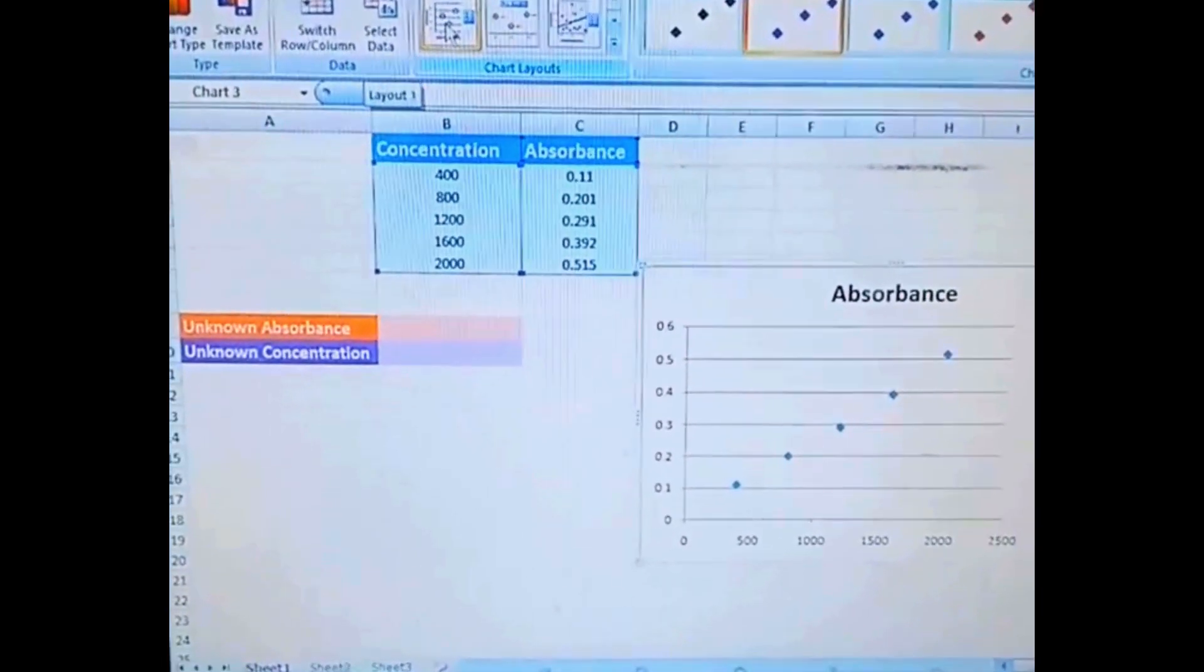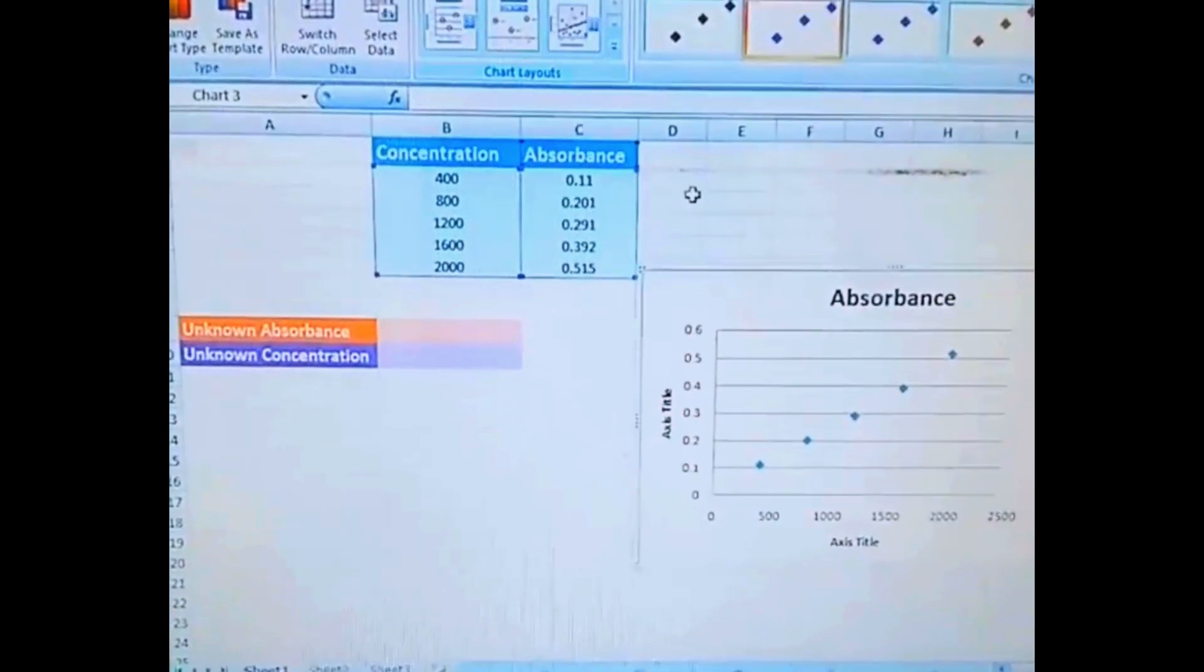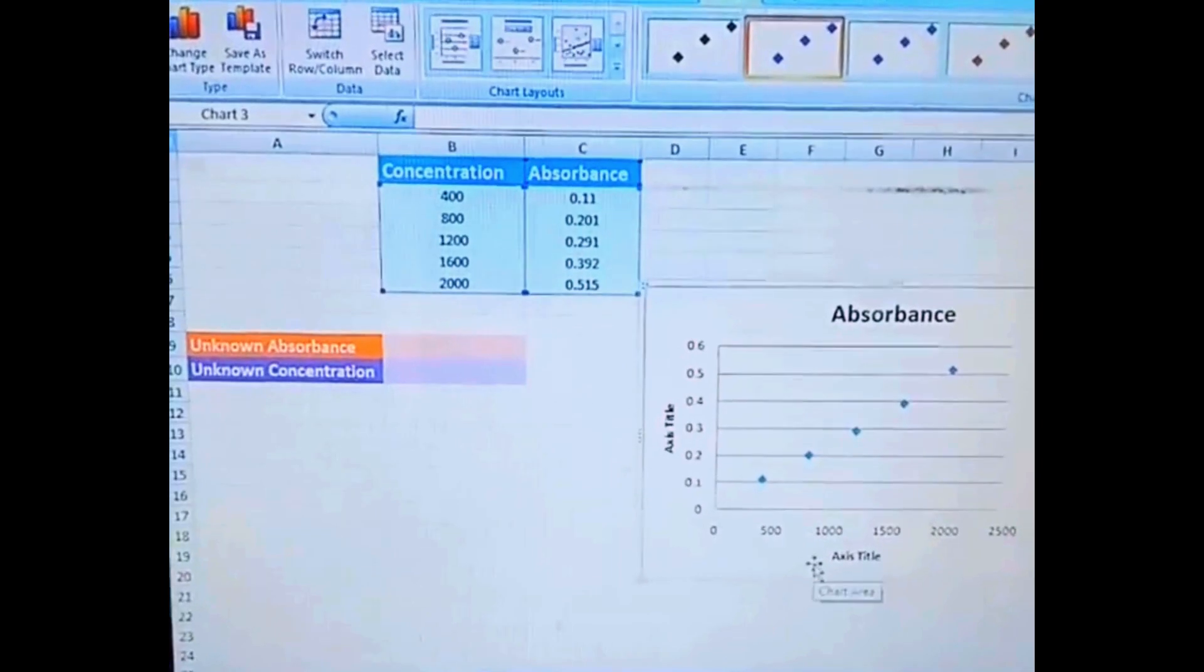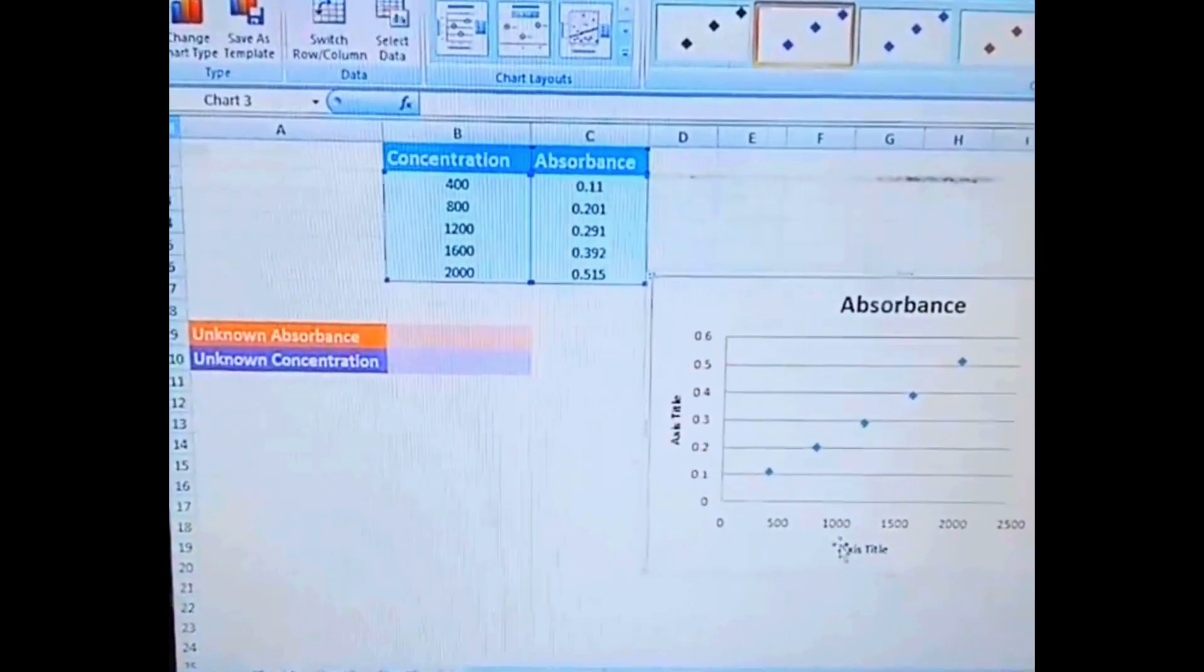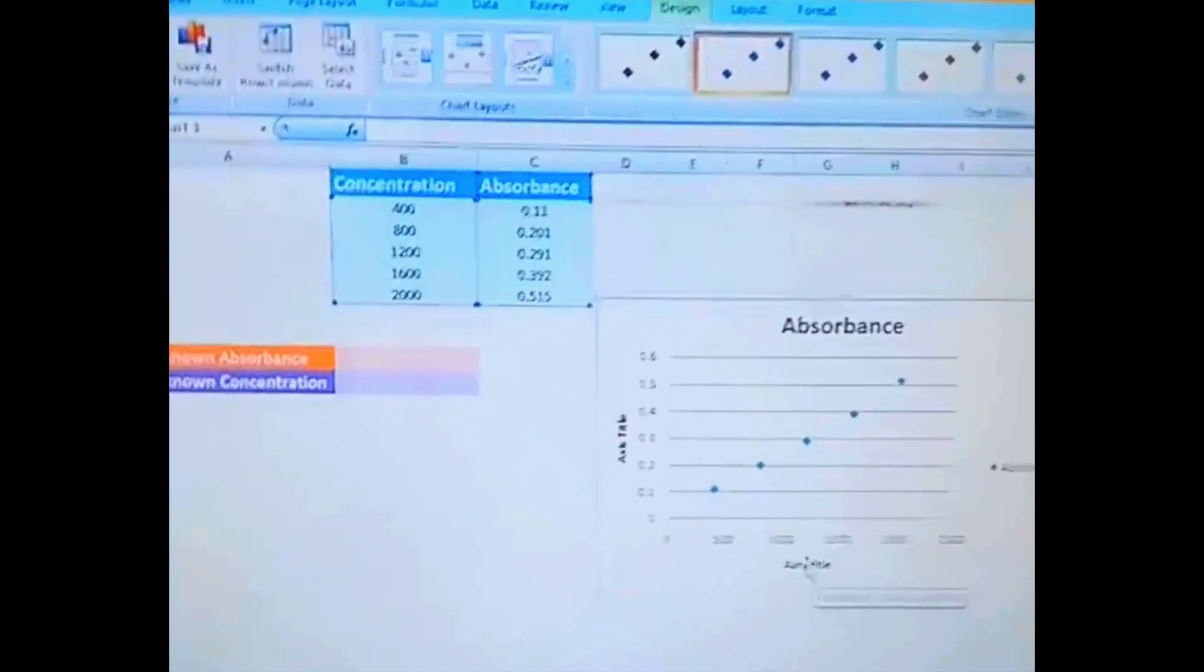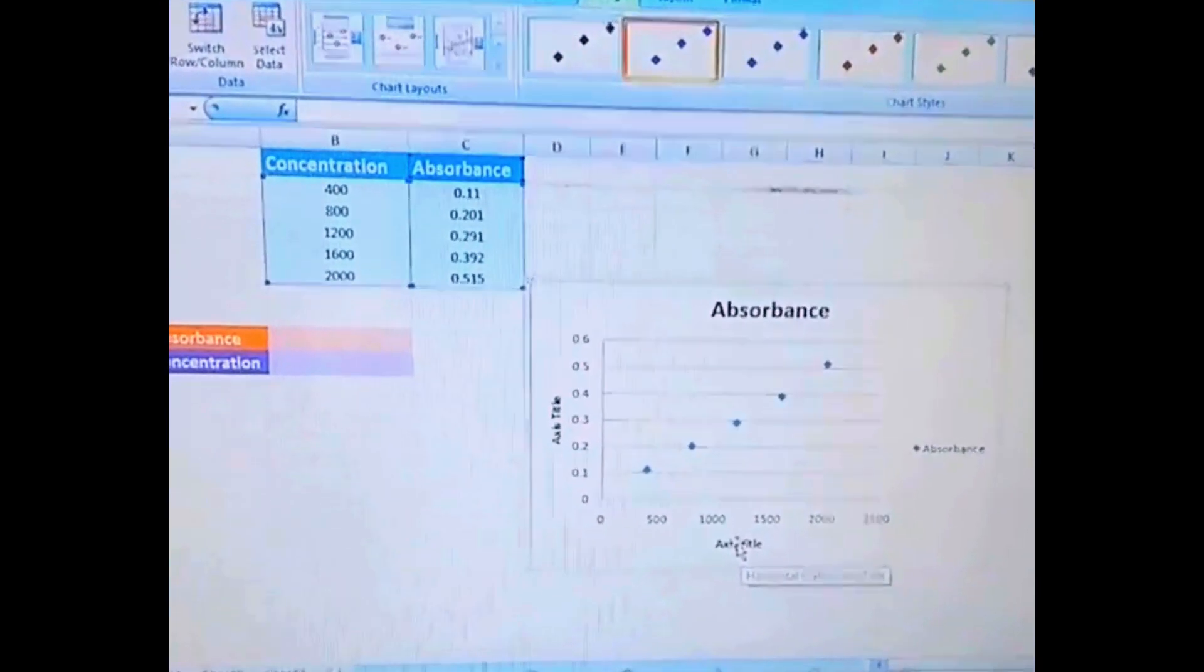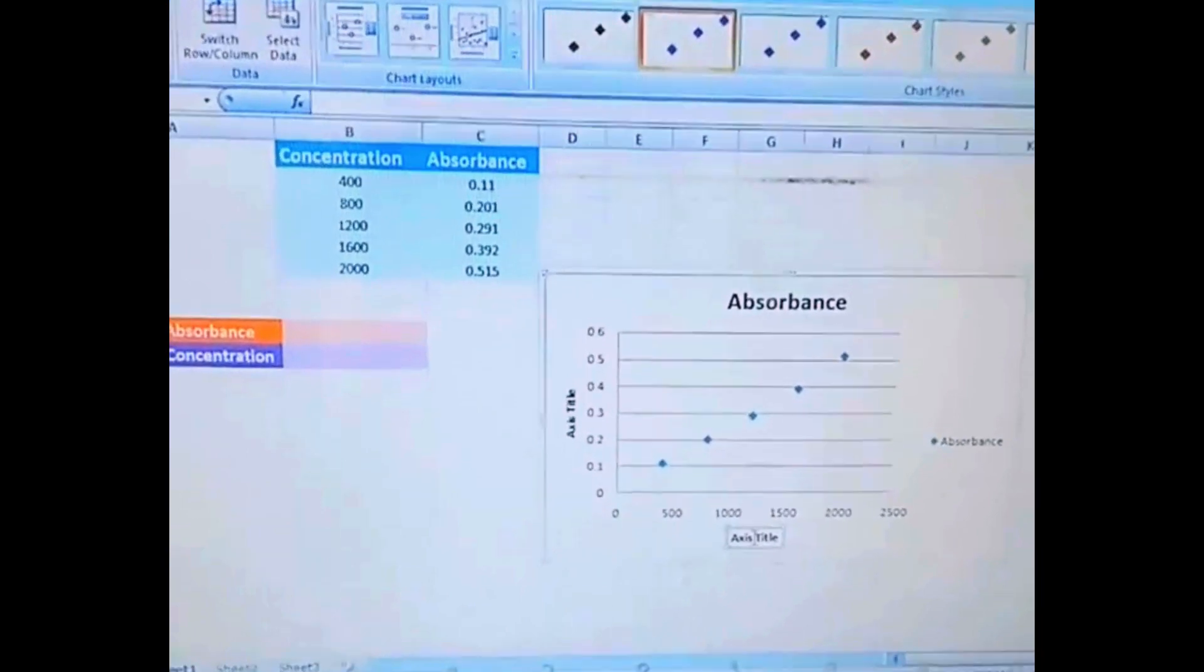Here we can see we have absorbance and here we have the X and Y axis. We know that on the X axis we always put the independent variable. So we can type here our independent variable, like we have the concentration.